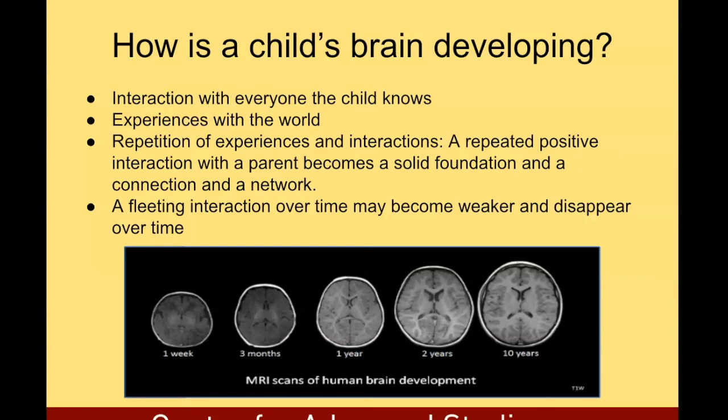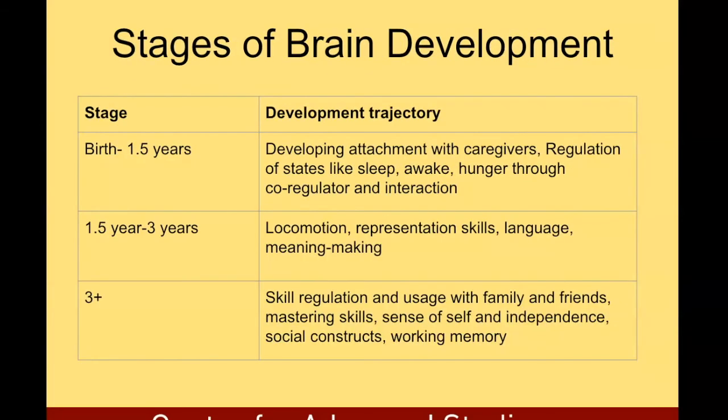Let's talk about how a child's brain develops. A child's brain develops due to interaction with everyone the child knows, experiences with the world, and repetition of those experiences and interactions. A repeated positive interaction with the parent becomes a solid foundation, connection, and network. A fleeting interaction over time may become weaker and disappear. Let's talk a little more about the stages of brain development now that we have learned about brain architecture.